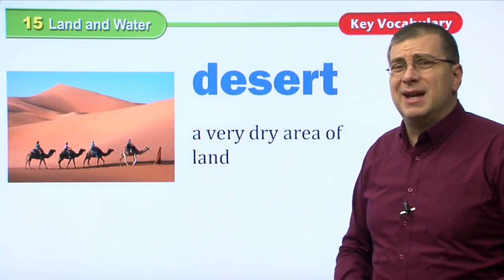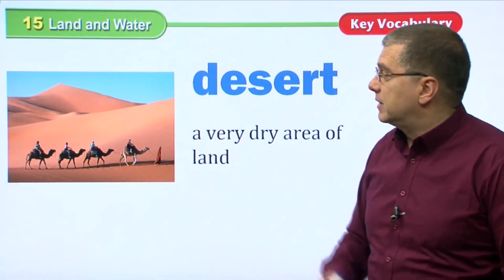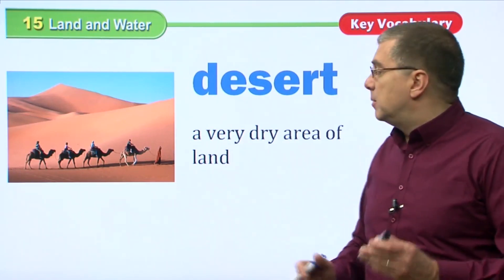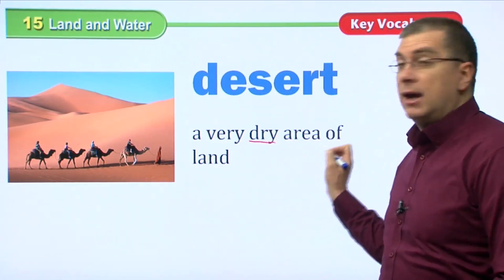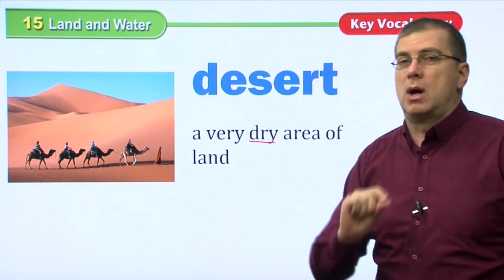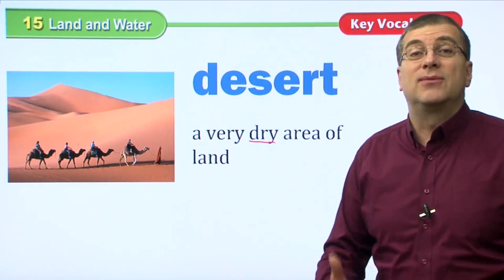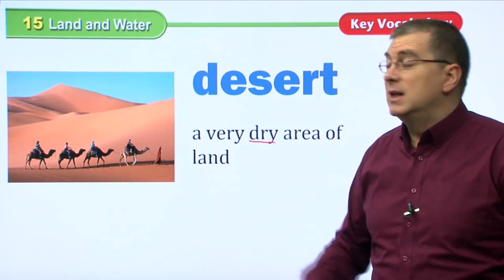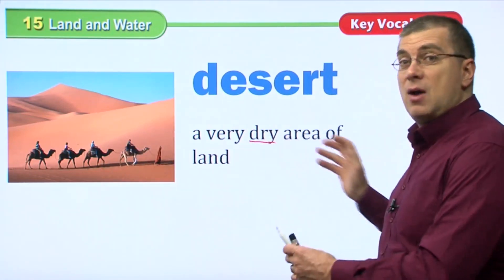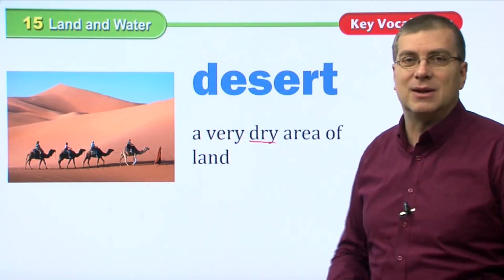We also have a desert. A desert is a very different type of place — very beautiful, but also very difficult to live in. Why? Because a desert is a very dry area of land. There's very little water, so plants and animals can't live there. It's very difficult for living things to survive in a desert. The people you see here are just passing through to find plants and water.